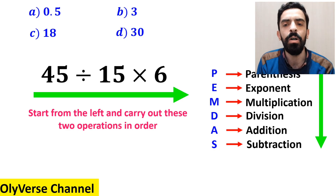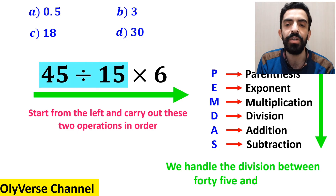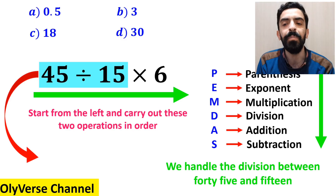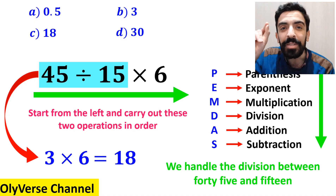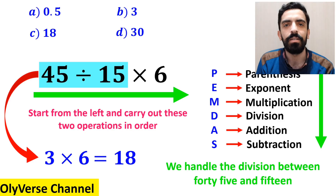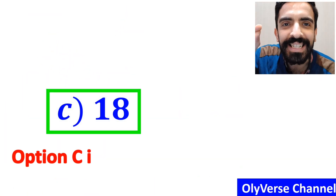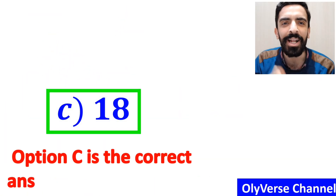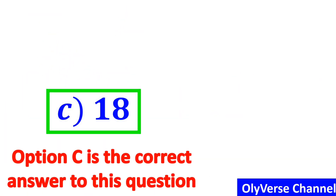So first we handle the division between 45 and 15, which simplifies the expression to 3 multiplied by 6. Finally, the answer becomes 18. Therefore, option C is the correct answer to this question.